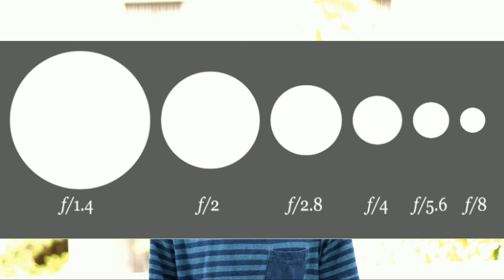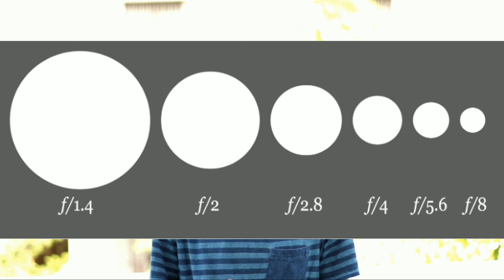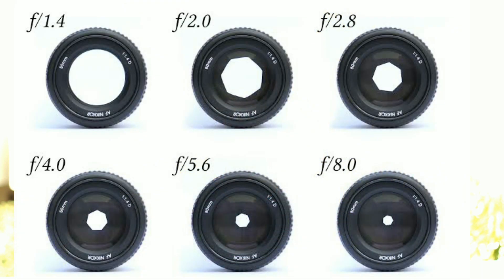The concept of aperture is quite confusing. But the larger number always means a smaller opening and the smaller number always means a larger opening. For example, f-numbers like f2, f2.8, f4 have larger openings, and apertures like f8, f11, f22 have smaller openings.